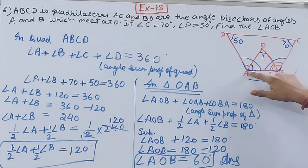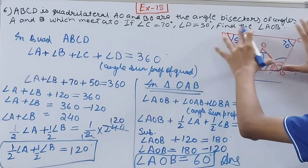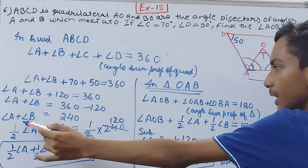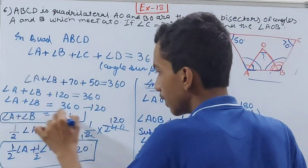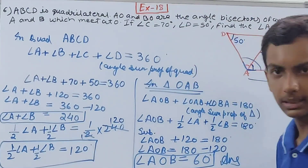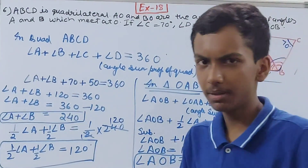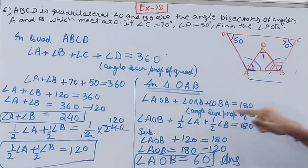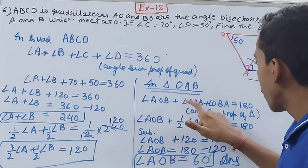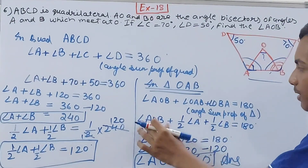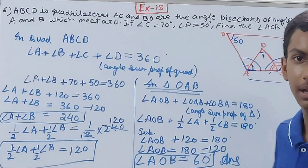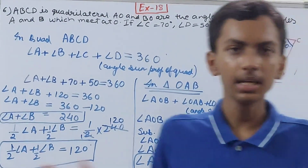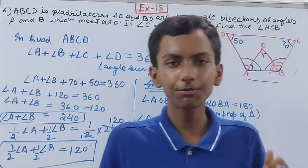So angle AOB is 60 degrees. To summarize: we used the angle sum of the quadrilateral to find angle A plus angle B equals 240. Then, halving both bisected angles gave 120 degrees, which we substituted into the triangle's angle sum to get angle AOB equals 60 degrees.